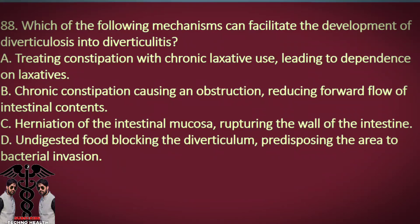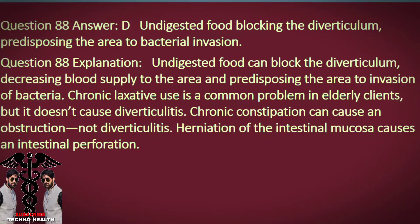Question 88. Which of the following mechanisms can facilitate the development of diverticulosis into diverticulitis? A. Treating constipation with chronic laxative use, leading to dependence on laxatives. B. Chronic constipation causing an obstruction, reducing forward flow of intestinal contents. C. Herniation of the intestinal mucosa, rupturing the wall of the intestine. D. Undigested food blocking the diverticulum, predisposing the area to bacterial invasion. Answer: D. Undigested food blocking the diverticulum, predisposing the area to bacterial invasion. Explanation: Undigested food can block the diverticulum, decreasing blood supply to the area and predisposing the area to invasion of bacteria. Chronic laxative use is a common problem in elderly clients, but it doesn't cause diverticulitis. Chronic constipation can cause an obstruction, not diverticulitis. Herniation of the intestinal mucosa causes an intestinal perforation.